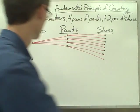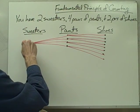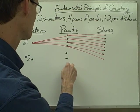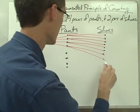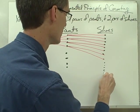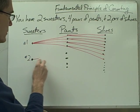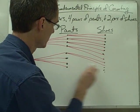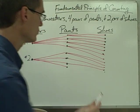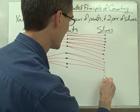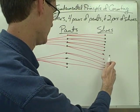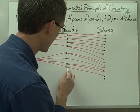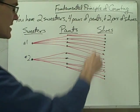I can do the same thing again with this second sweater — sweater number one and sweater number two. I can do the same thing again with my second sweater, matching it up with my pairs of shoes, taking this sweater and matching it up with each one of these pairs of pants, and then matching each one of those up with one of my pairs of shoes. Each outfit is represented by one of these lines.